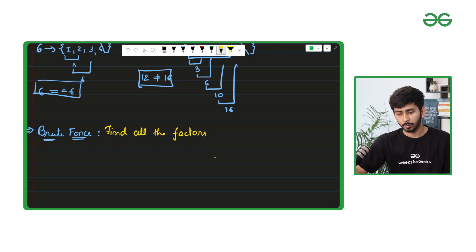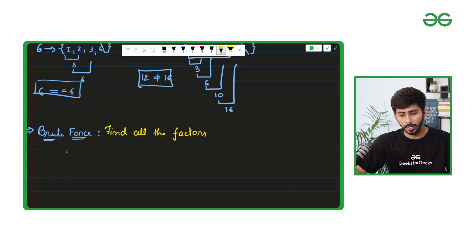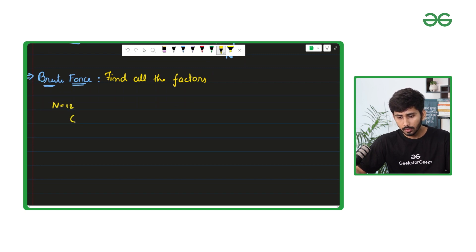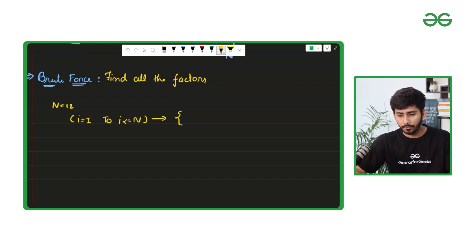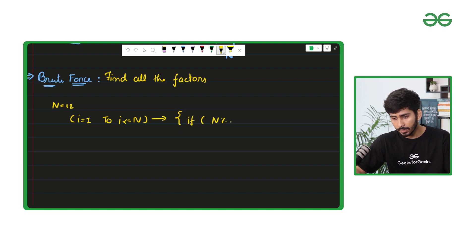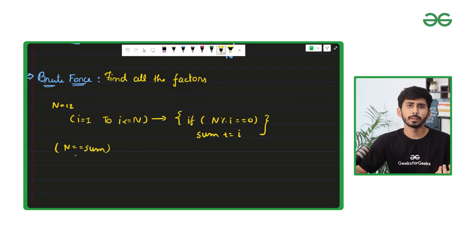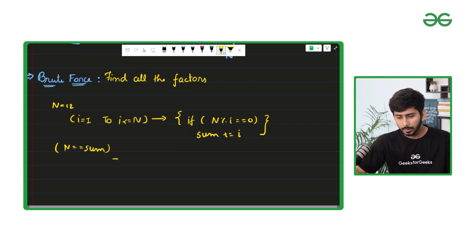Now let's understand what the brute force approach can be. In the brute force approach, we try to find out all the factors by iterating over all numbers starting from 1 to n. For each i, we check whether n is divisible by i. If it is, we add it to the sum variable. At the end, we check if n is equivalent to sum. The time complexity of this approach is O(n) and the space complexity is O(1).